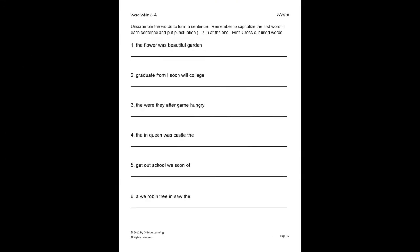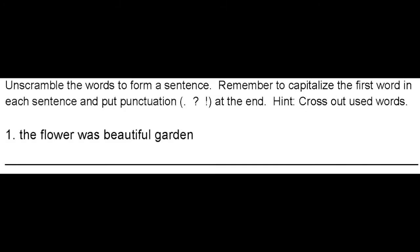Here, unscramble the words to form a sentence. Remember to capitalize the first word in each sentence and use punctuation at the end. It helps to also cross out used words. Let's look at number one. We are given the words, the flower was beautiful and garden. So, we must unscramble the words to form a complete sentence. The flower garden was beautiful.